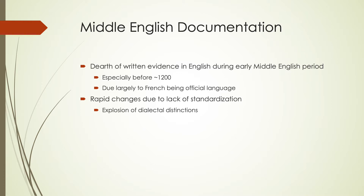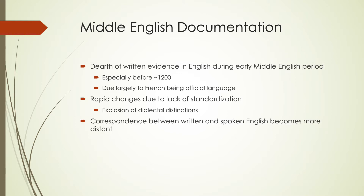By the Middle English period, when the Normans took over and French was the official language, there was not really any standardized form of English being used. This exploded all those dialectal differences and made it much more difficult to have a centralized way to write everything down. But because of this lack of standardization, we can actually learn a lot about the sound system of Middle English from what was written in English.